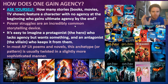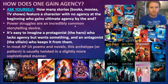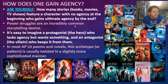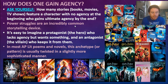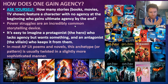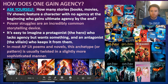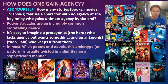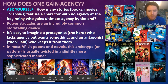How do you confront those invisible power structures that limit or control your agency? It's easy to imagine a protagonist — the hero who lacks agency but wants something — and an antagonist like the villain who keeps it from them. This is seen in religious texts and stories about characters like Icarus, Jesus, or Siddhartha. In most AP Lit poems and novels, this archetype or pattern is usually twisted in a more sophisticated manner — more sophisticated than Stan Lee from Marvel, J.K. Rowling, James Cameron's Avatar, or Alan Moore, who wrote some of the Dark Knight Batman stories.